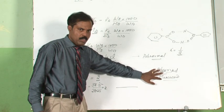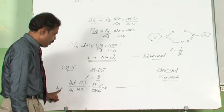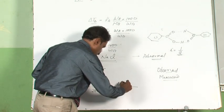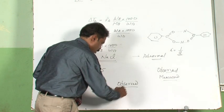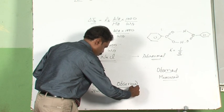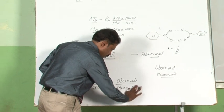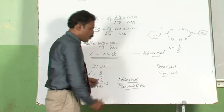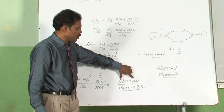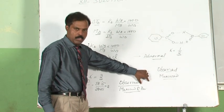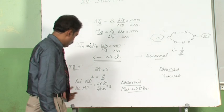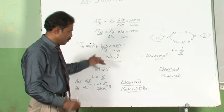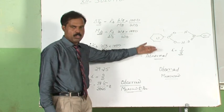That is the actual colligative property. To find the value of i, the observed colligative property — which may show abnormality — divided by the measured colligative property — which should show no abnormality — gives you the value of i. This is how we correct the abnormality resulting from association or dissociation.